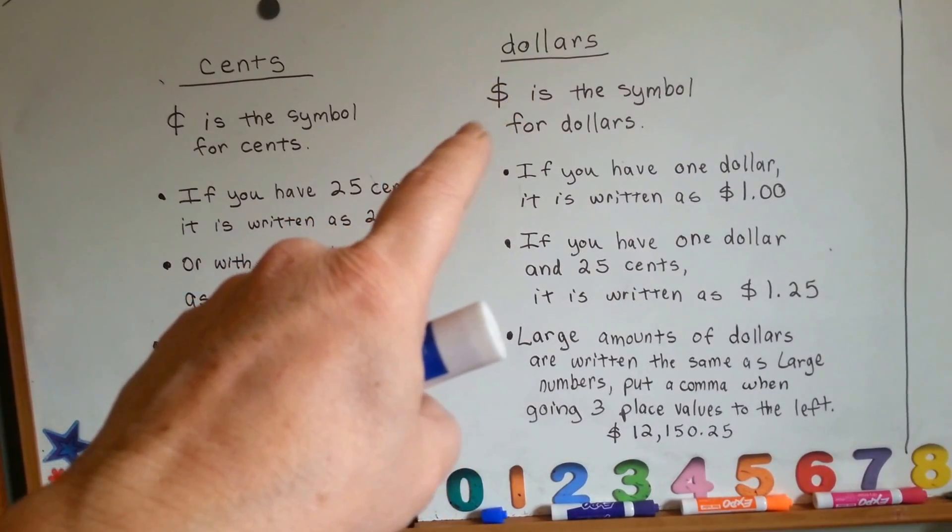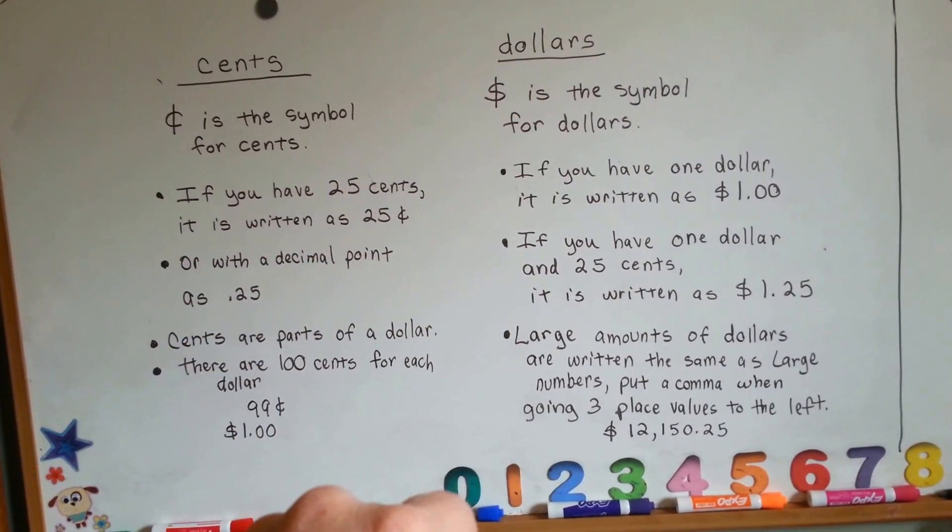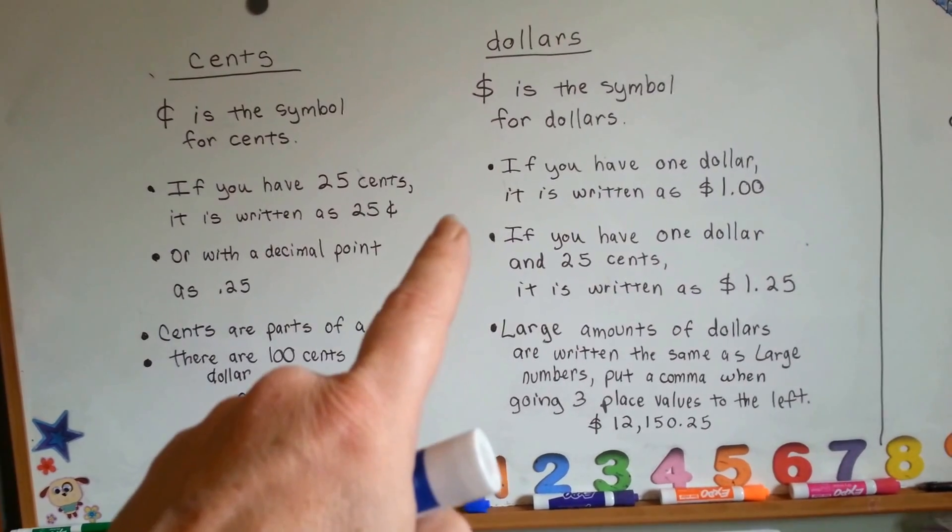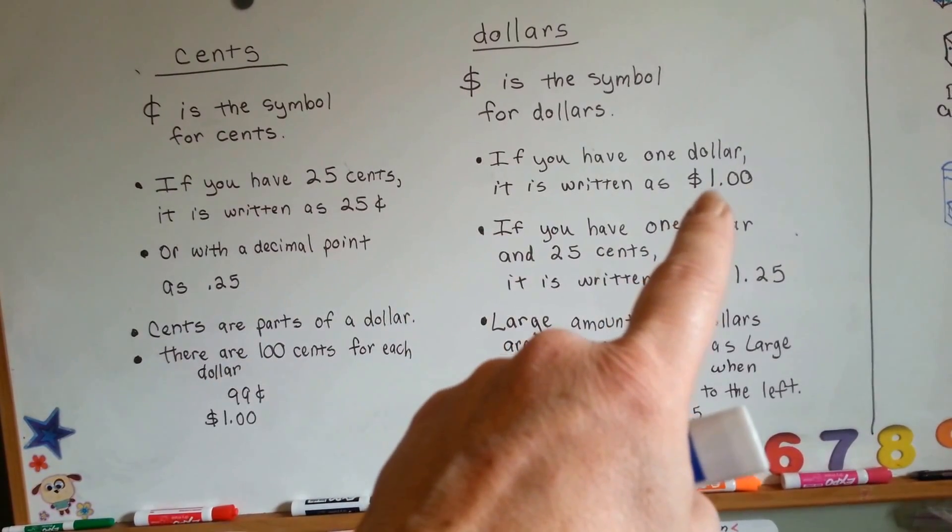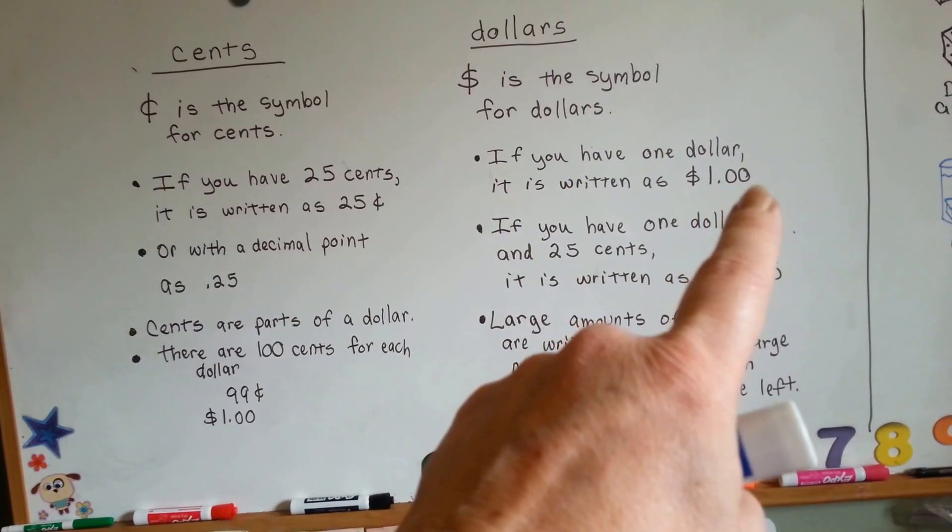You make an S and put a line straight down through it. That's the symbol for dollars. If you have one dollar, it's written as the $ with a line through it, a one, and then a decimal point, and then two zeros: $1.00.